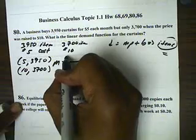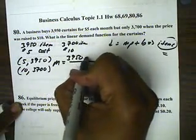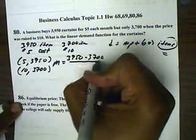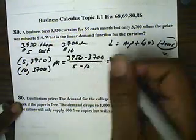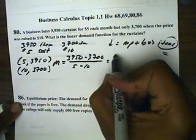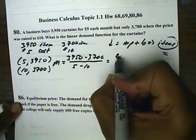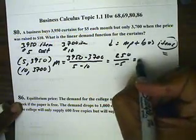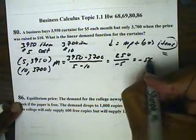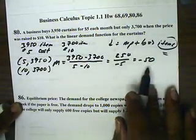Slope will be made from 3950 minus 3700 all over 5 minus 10. This will be 250 all over negative 5 and that gives me negative 50. So, that's my slope, negative 50.